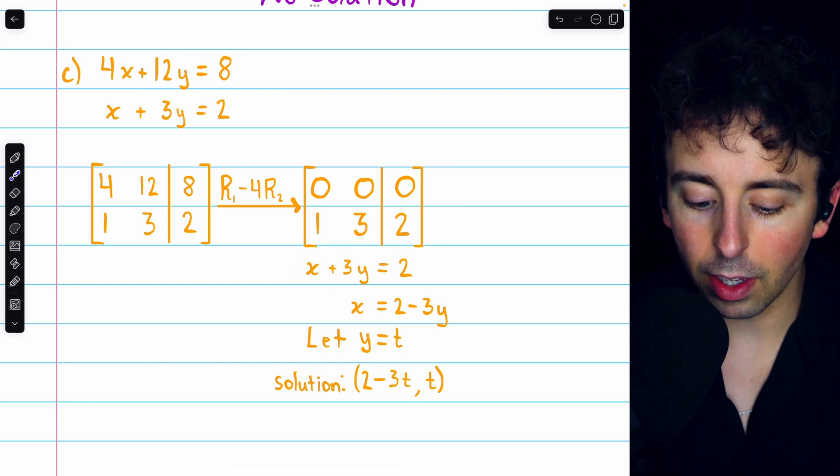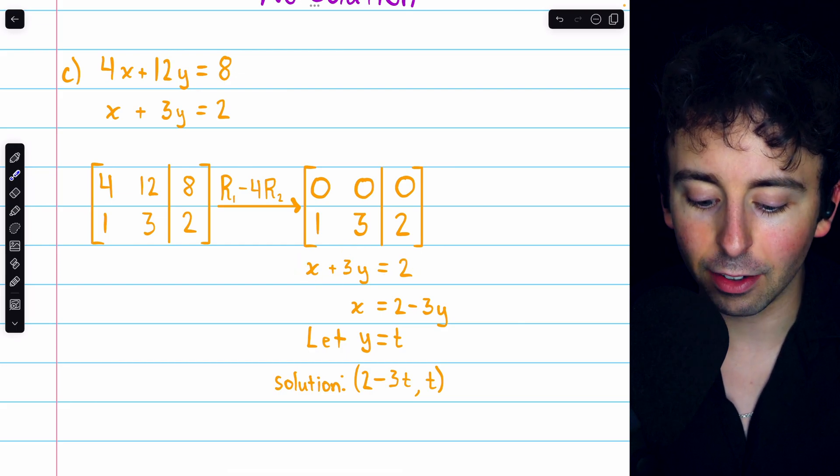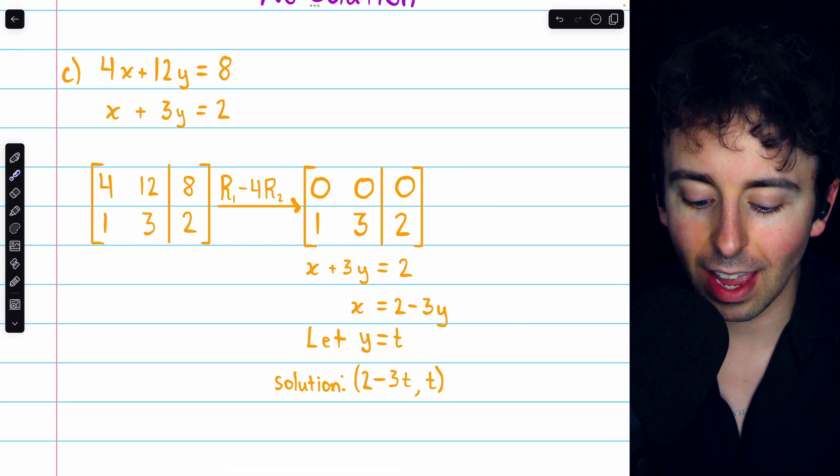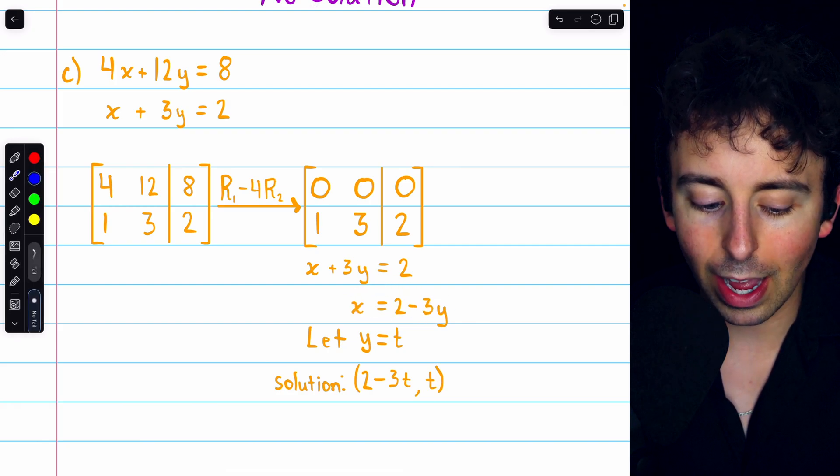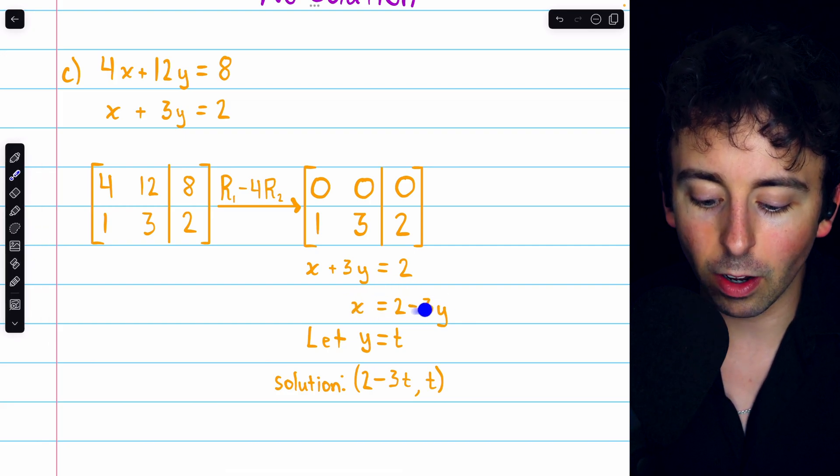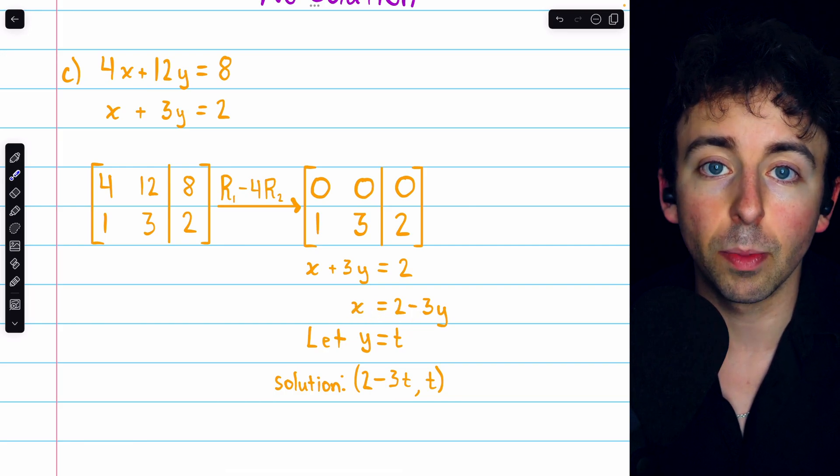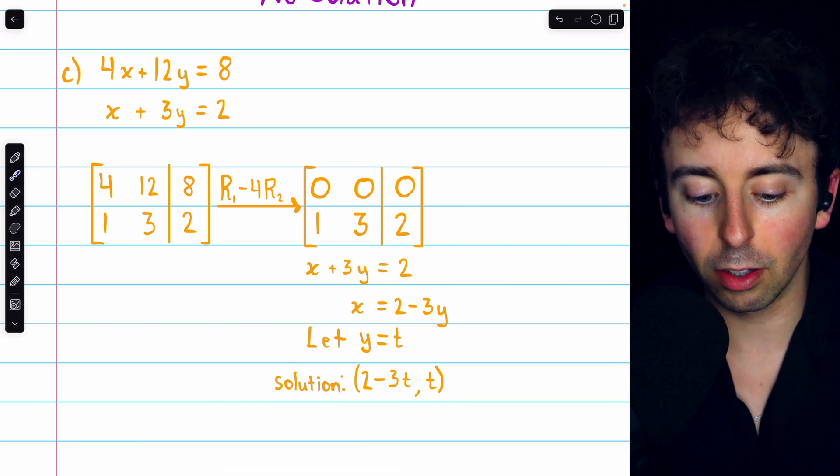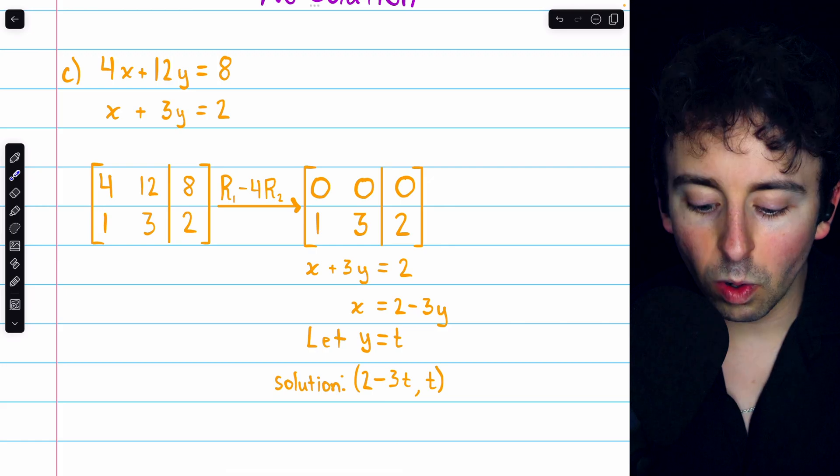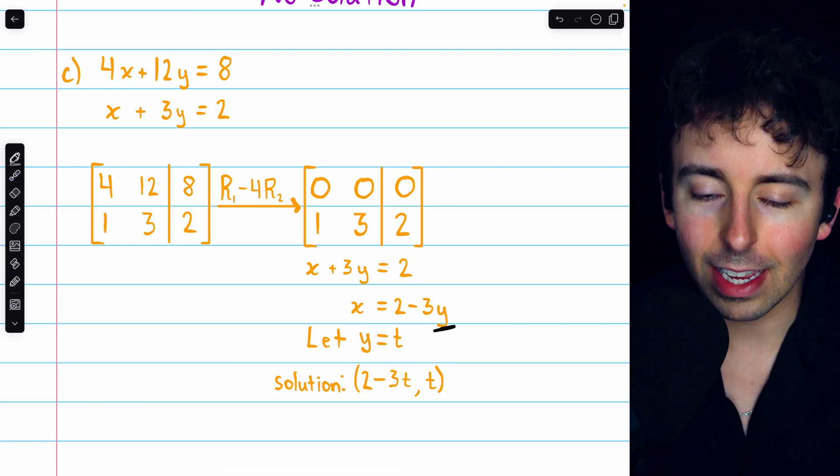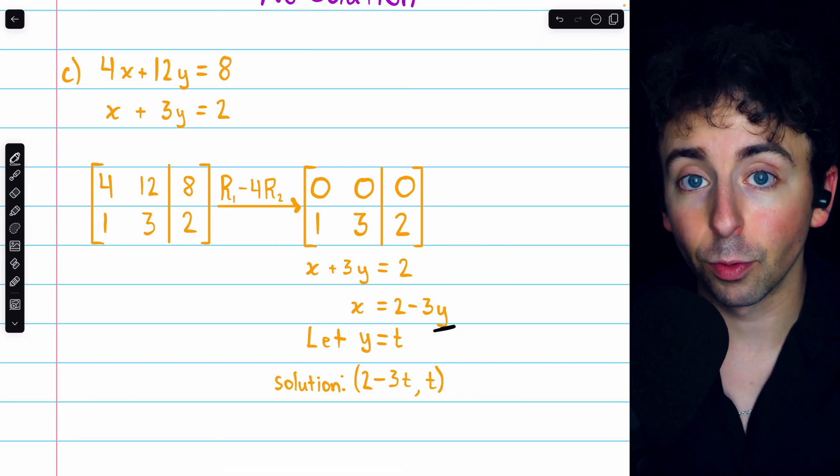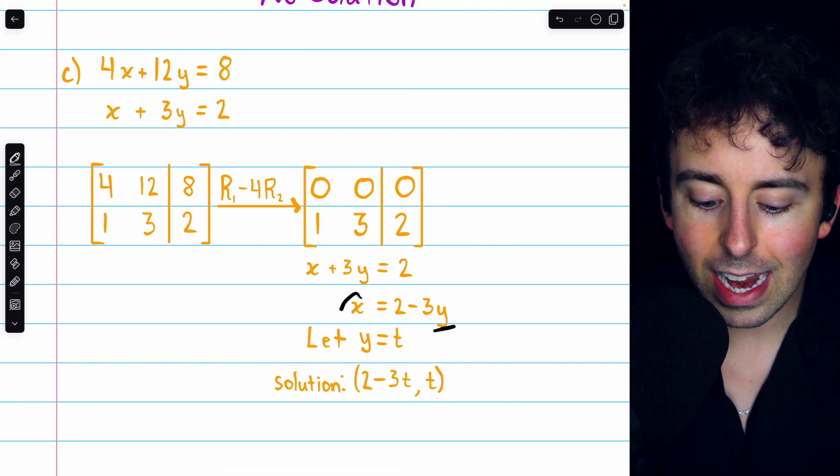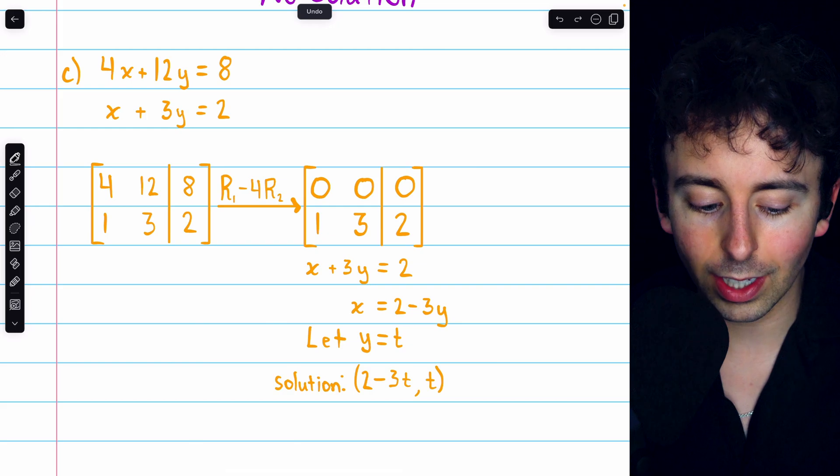We can solve this for that leading variable x by subtracting 3y from both sides. Thus, we have x equals 2 minus 3y. So, in fact, any point on this line, x equals 2 minus 3y, would be a solution to this system. When we describe the solution like this, y is the independent or what we call a free variable. It's free to be whatever it chooses, and x can be calculated accordingly.